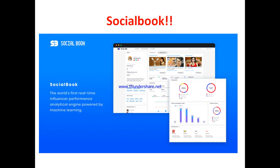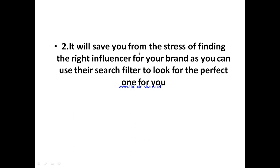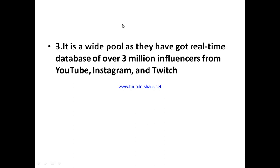The first interesting thing about Social Book is that it allows you to get results-tested influencers for your brand. There is a difference between an ordinary influencer and a results-tested influencer, and Social Book helps you find proven ones so you don't waste money or time. Another great thing is the search filter, which lets you find the perfect influencer that aligns with your products and industry to deliver the right results for your business.